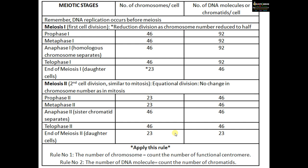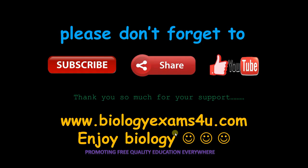So the result of meiosis is four cells with half the number of chromosomes. Hope you got the point. Thank you so much for watching. You are with biologyexams4u.com.